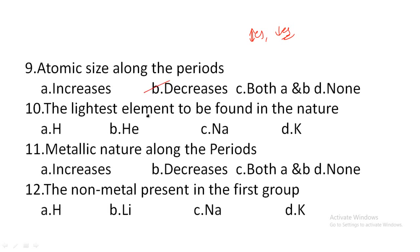Next: the lightest element found in nature — option A: hydrogen, option B: helium, option C: sodium, option D: potassium. The lightest and the smallest element found in nature is hydrogen. Hence, option A is the correct answer.